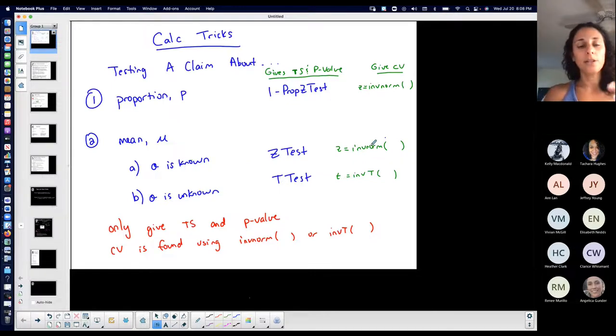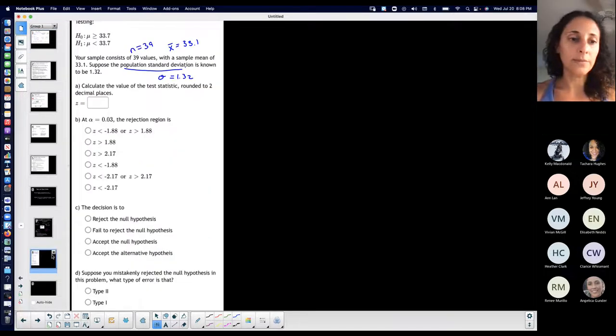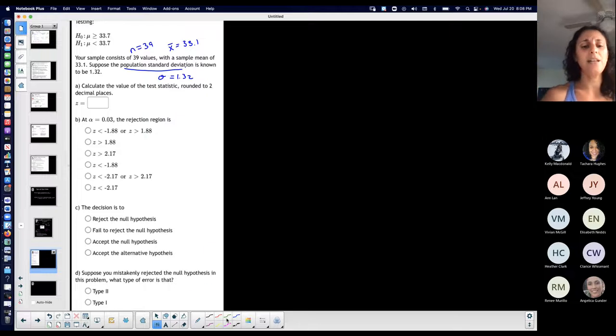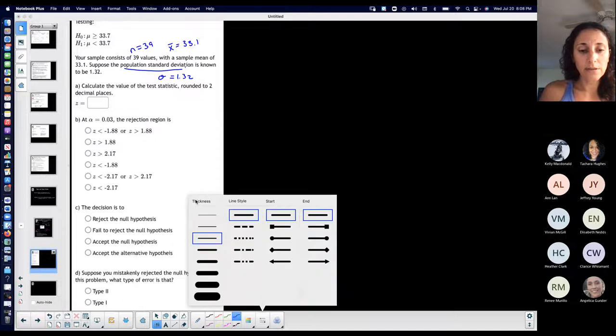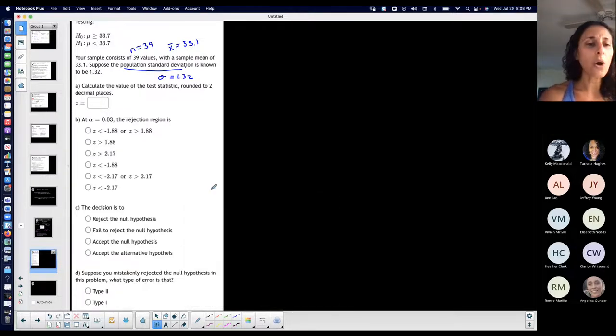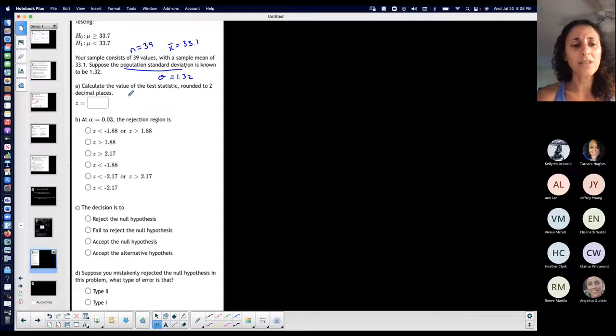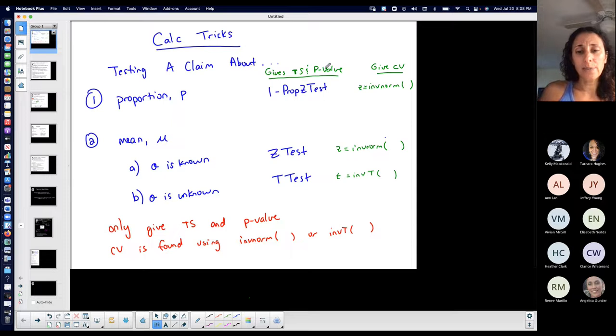Therefore, I have this to a case. I would use z-test. I would use inverse norm dependent on what I want. If I want a critical value, inverse norm. If I want the test statistic and the p-value, z-test using the TI-84. Calculate the value of the test statistic round to two decimal places. Easy, because all I have to do is go z-test.